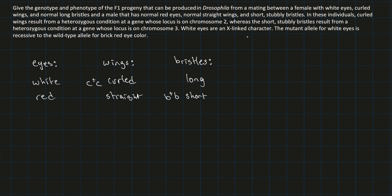White eyes are an X-linked character. The mutant allele for white eyes is recessive to the wild-type allele for brick-red eye color. So we don't have a heterozygous-dominance situation here — it's a basic recessive-dominant relationship. White eyes are the recessive form, and red eyes require at least one dominant allele (W⁺).